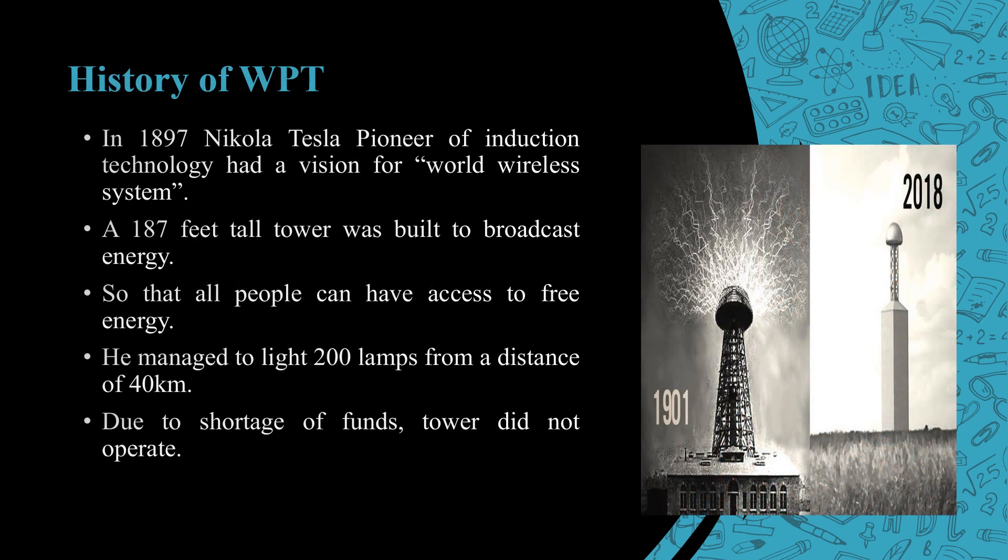History of wireless power transmission: in 1897, Nikola Tesla had a vision of world wireless system. A 187 feet tall tower was built to broadcast energy so that all people can have access to free energy. It managed to light 200 lamps from a distance of 40 kilometers. Due to shortage of funds, the tower did not get operated.